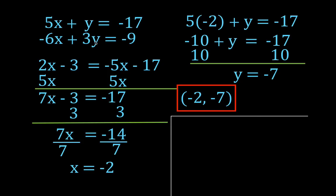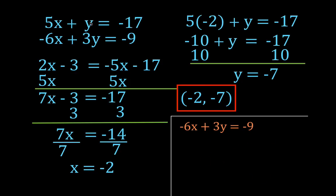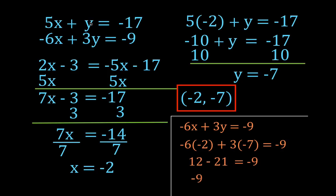I say hopefully because we're going to check it quickly to be almost 100% sure. I substitute these two values into both equations. For the first equation: 5 times minus 2 is minus 10, minus 7 equals minus 17 — left side is minus 17, right side is minus 17, the equal sign holds true. I substitute into the second equation as well — both sides simplify to minus 9. That point is now confirmed to be a solution to both equations, and our answer is minus 2, minus 7.